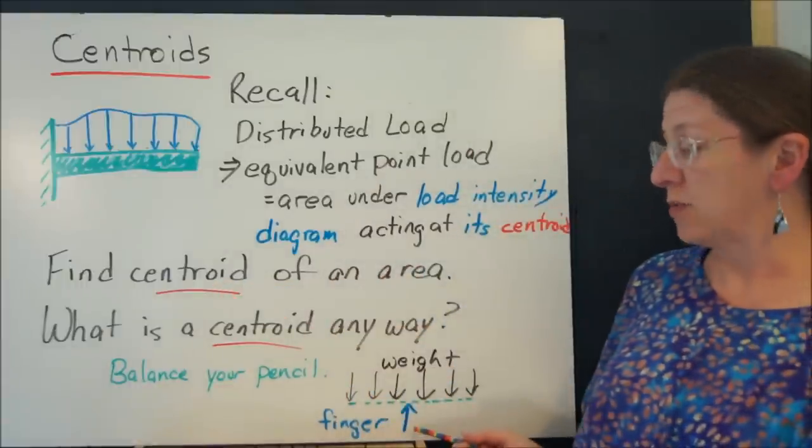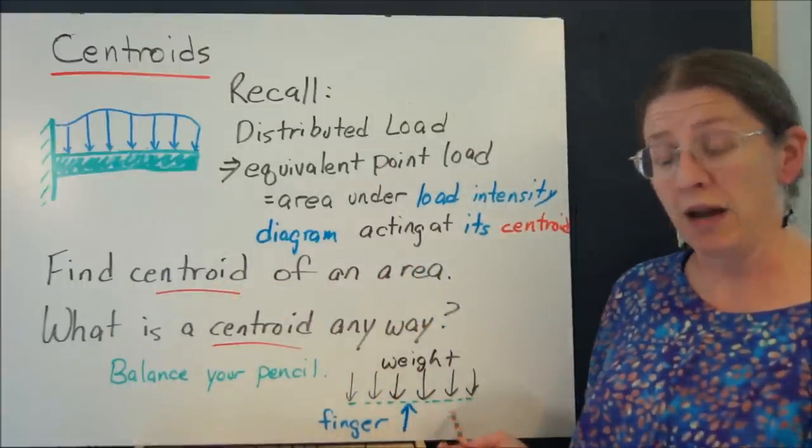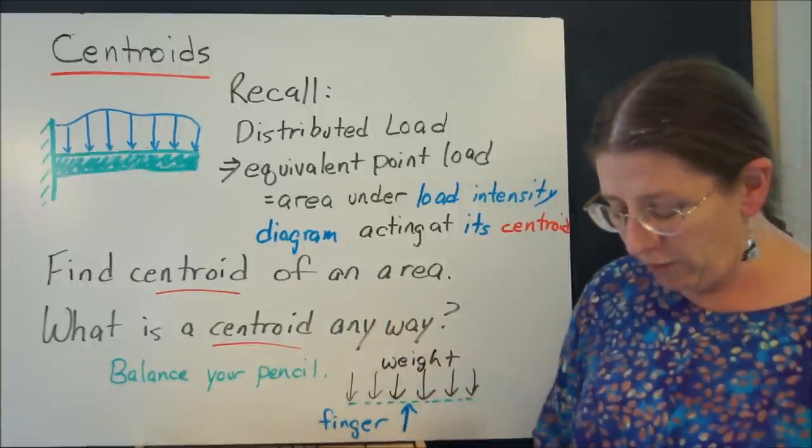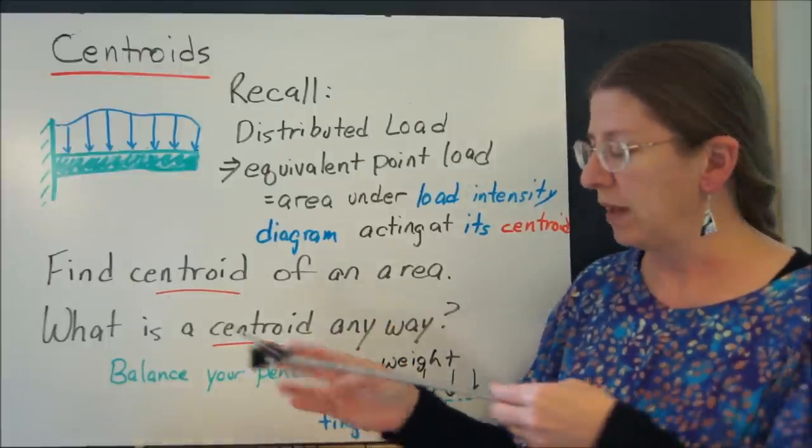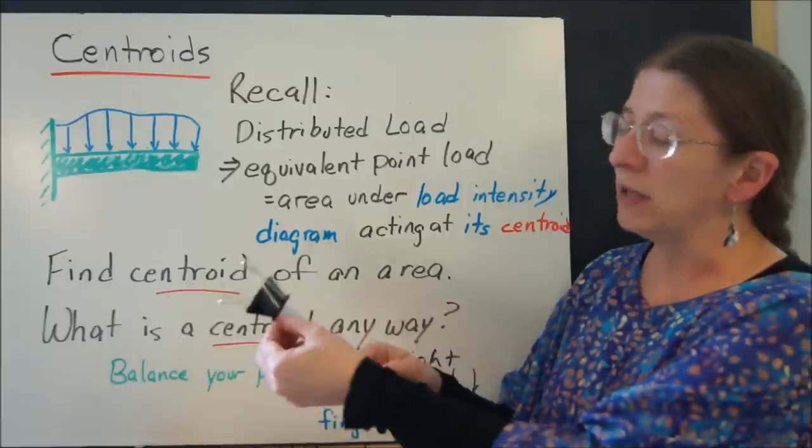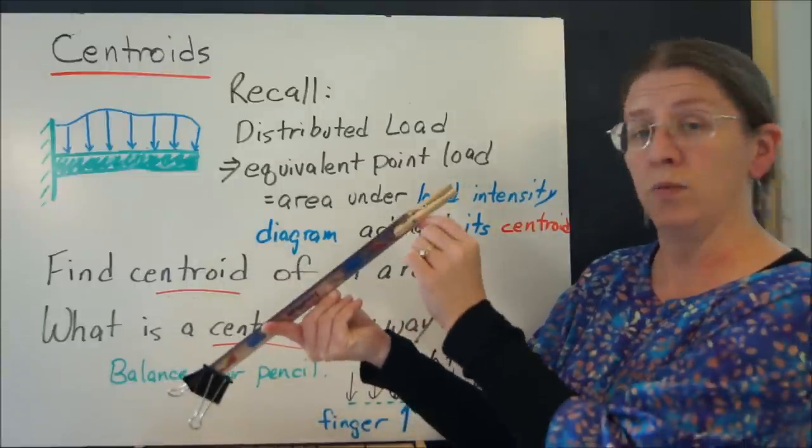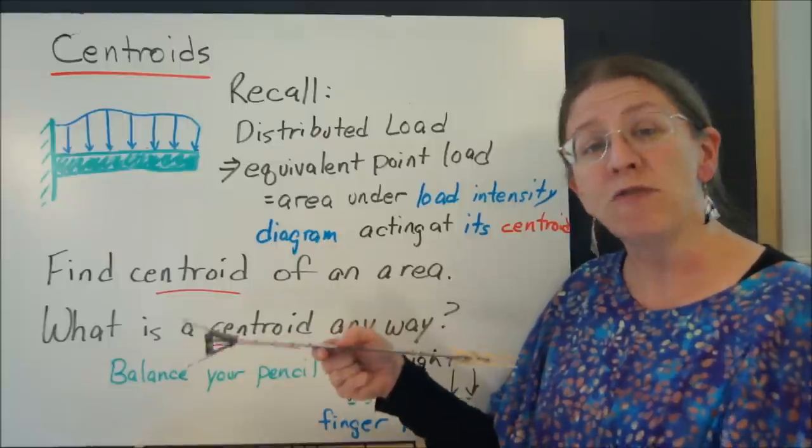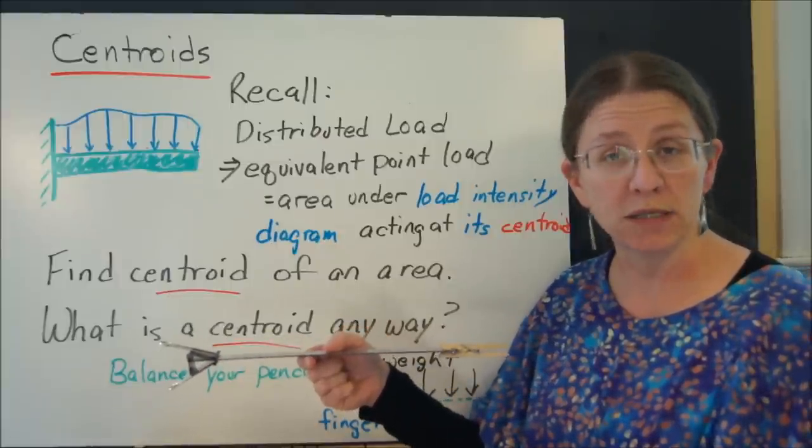So here's my weight and here's my finger. I want to balance this weight on either side. Now let's talk about this for just a second. Here's another one. I have a binder clip on this side and just a wooden clothespin on that side. How am I going to find where the balance point is?